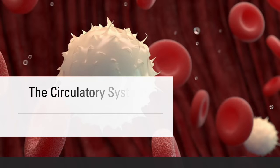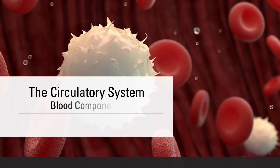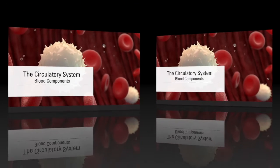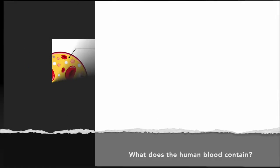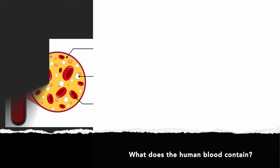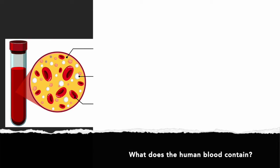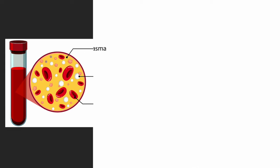We present the circulatory system. In this short lesson, we cover blood components. What does the human blood contain? The blood in our bodies is a fluid, and it contains the following components.